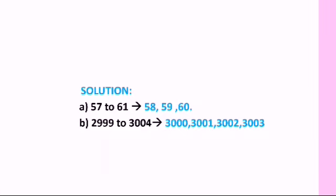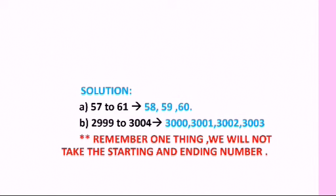For part B, between 2999 and 3004: after 2999 comes 3000, then 3001, 3002, 3003, and 3004. Since we do not write the starting or ending numbers, the answer is 3000, 3001, 3002, and 3003. Remember: always remove the starting and ending numbers when writing between numbers.